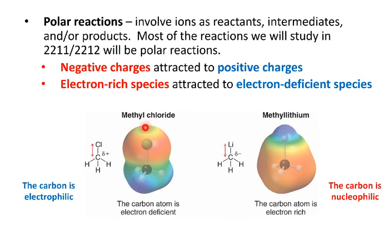In these plots, where the plots are reddish, that's showing high electron density, and where the plots are bluish, it's showing low electron density. So we can see that in the methyl chloride, we have lots of electron density around the chlorine, and the carbon is electron deficient. And in the other case, where I've got the lithium attached to the methyl group, the carbon has a lot of electron density, and the lithium is electron deficient.